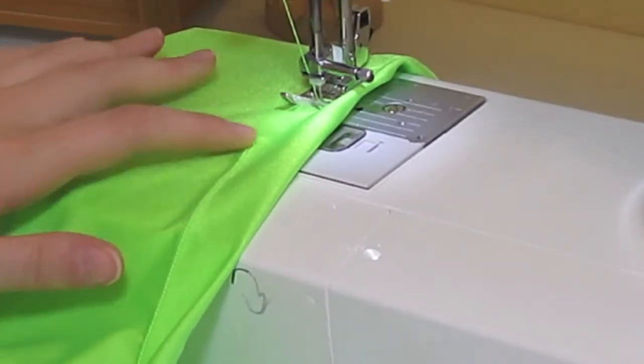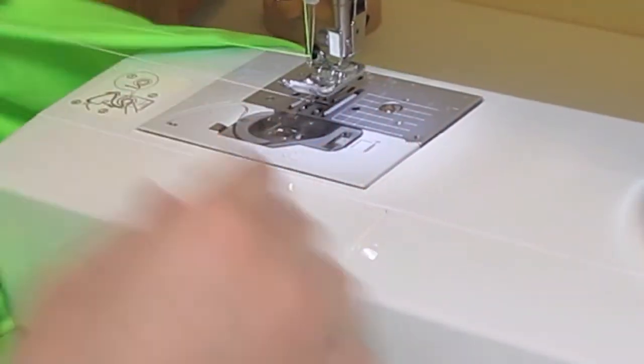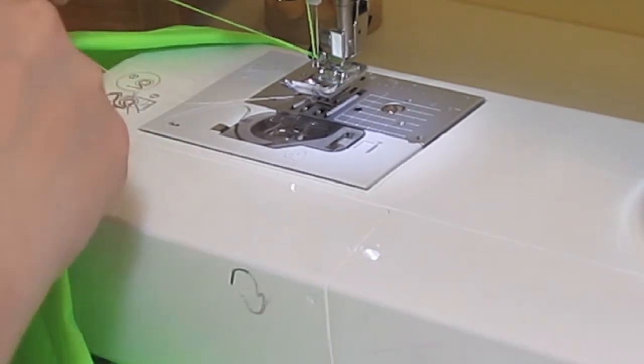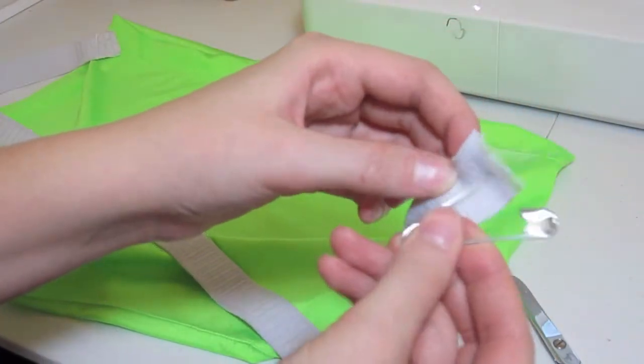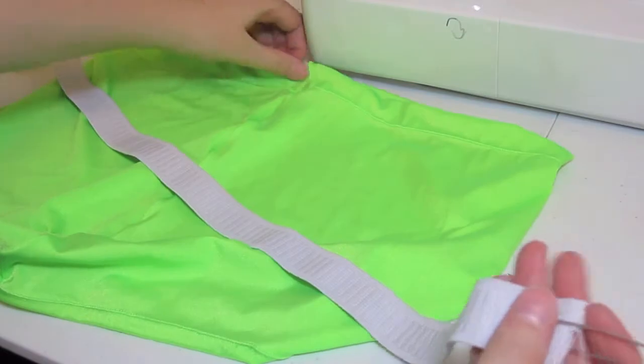So here I am about an inch and a half from where I started and I'm going to stop right there and cut my threads because then I can have a place to put my elastic in. So next I'm going to take my elastic and put a safety pin through the end of it. This will make it a lot easier to pull it through the shorts.